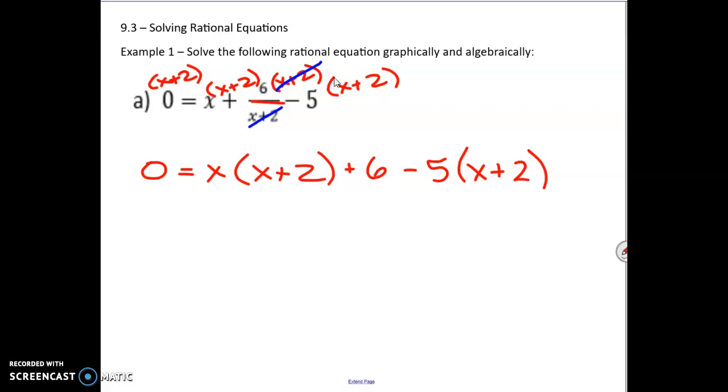So now from here, the solving doesn't change. We're just going to multiply things out, combine like terms, and then factor. So we'll multiply the x into the x plus 2, and the minus 5 into the x plus 2. Here we'll get x times x is x squared, plus 2x, plus 6, minus 5x, minus 10.